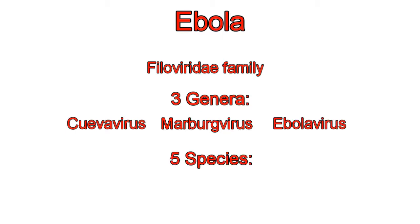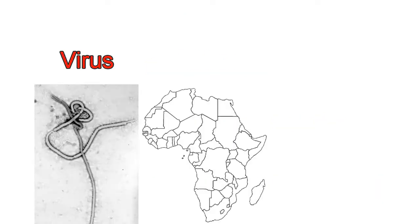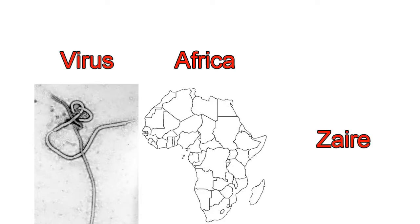There are five species that have been identified: the Zaire, the Bundibugyo, the Sudan, the Reston, and the Taï Forest. The virus currently affecting Africa belongs to the Zaire species.